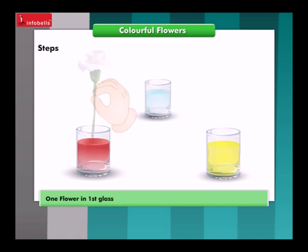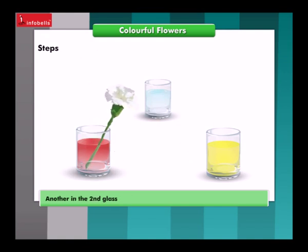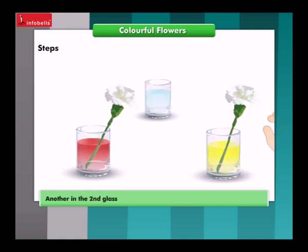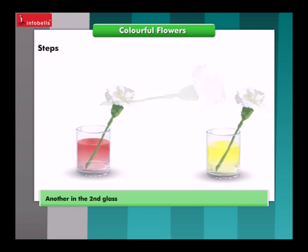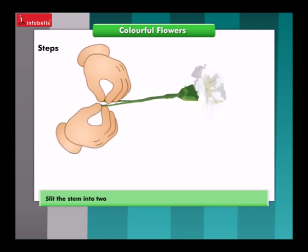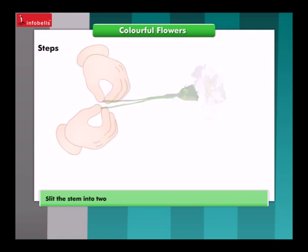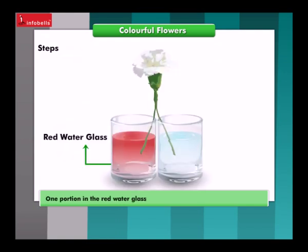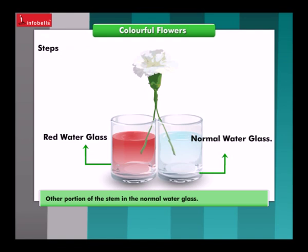Let this third glass have normal water. Place one flower in the first glass, another in the second glass. Take one more flower and slit the stem into two. Keep one portion in the red water glass, and the other portion of the stem in the normal water glass.